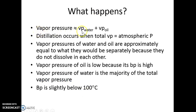The vapor pressure is about the vapor pressure of water plus the vapor pressure of the oil, and when the total of those two vapor pressures equals atmospheric pressure, boiling occurs. Because they're not miscible in each other, the vapor pressures are approximately what they would be for either the water or the oil separately at that particular temperature.